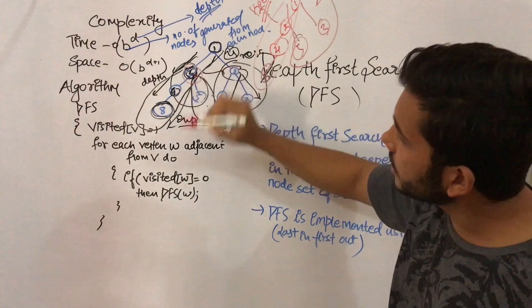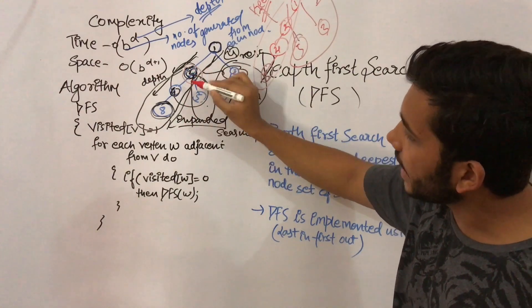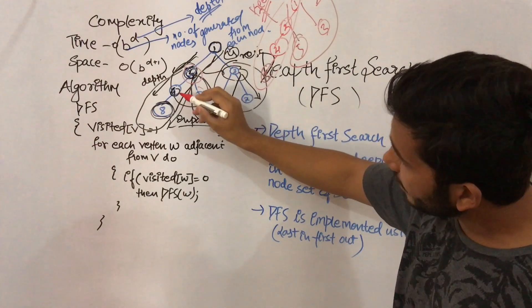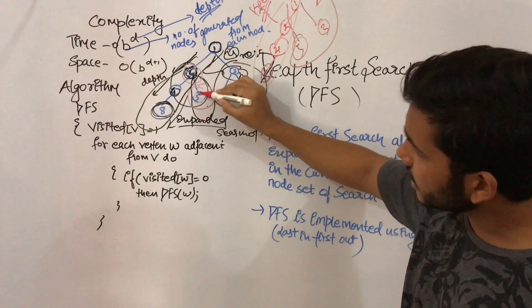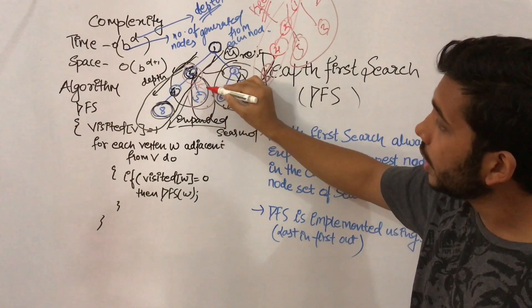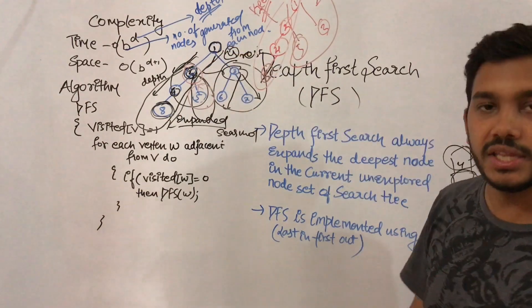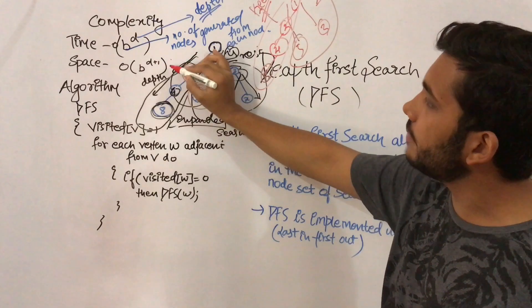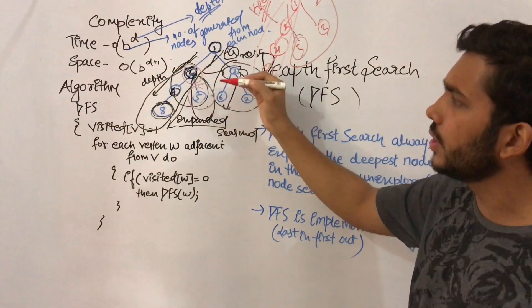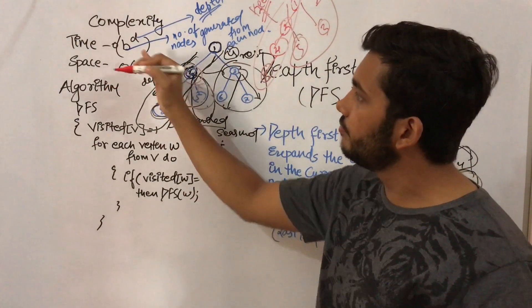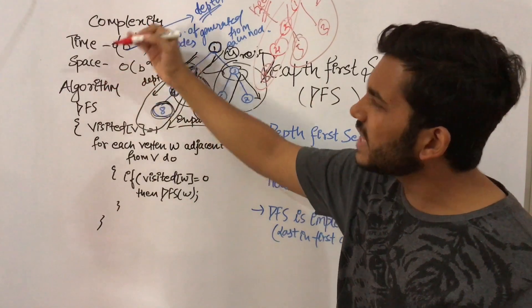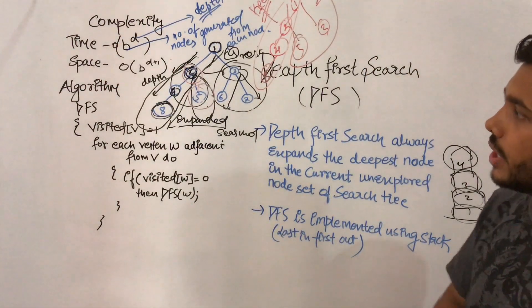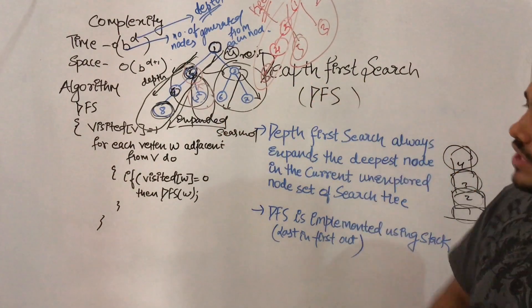The space complexity of depth first search requires keeping parent nodes in memory. For example, if you have explored node 8 but not yet node 5, you still need to keep node 2 in memory. So space complexity of depth first search and breadth first search are mostly equal, but time complexity of depth first search is slightly less than that of breadth first search.